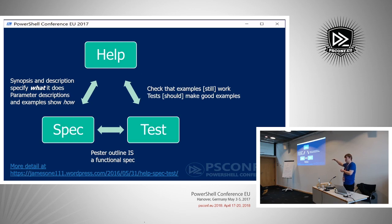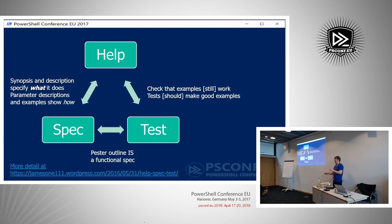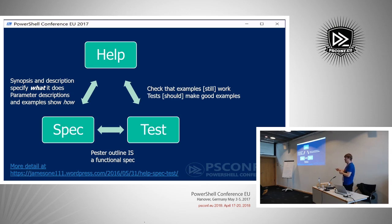When you run the test script it shows you that your help examples still work. There's nothing worse than writing help that says you can use the command like this, then changing something about the parameters so that the positional parameters that worked once no longer work. Now you've told your users 'this is how it's going to work' and it doesn't. When you change something, you just rerun the test script and verify your help examples still work. The tests should be good examples, the examples should be good tests, and the three corners all fit together.